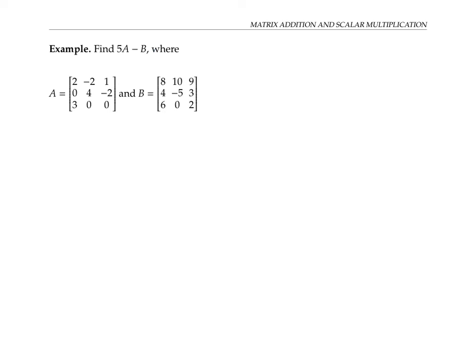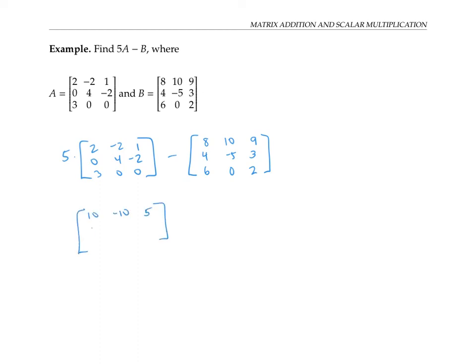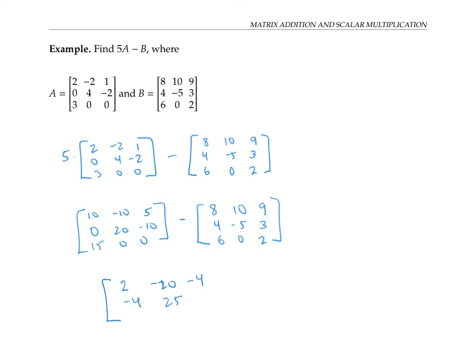Let's end with an example: finding 5A minus B, where A is a three by three matrix and B is another three by three matrix. I want to take five times matrix A and then subtract matrix B. To do five times A, I multiply all the entries by five, then I subtract matrix B entry by entry. I get: two minus twenty, minus four, minus four, twenty-five, minus thirteen, nine, zero, and minus two as my final answer.